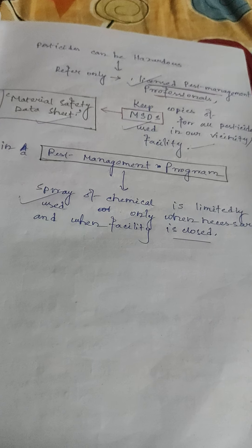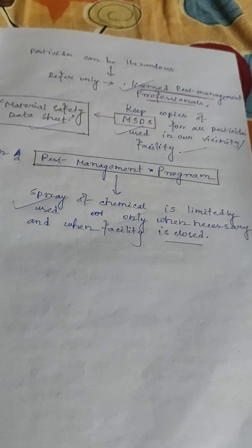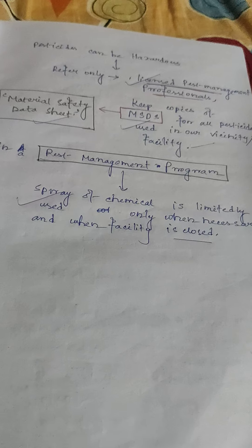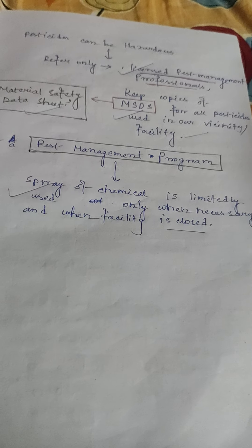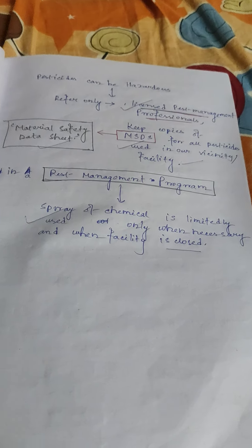Common fly pests include two categories: filth flies and others. Filth flies are strong flies with three types: house fly, blow fly, and flesh fly. Filth flies are relatively small, soft-bodied insects with large eyes.